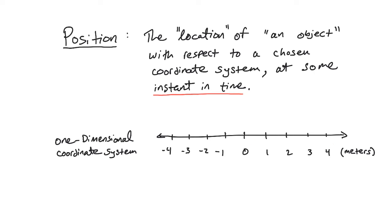four meters, or we could go to the left, and we label those mathematically with negative numbers: negative one, negative two, negative three, negative four. Hopefully this type of number line is maybe familiar to you from a math class.